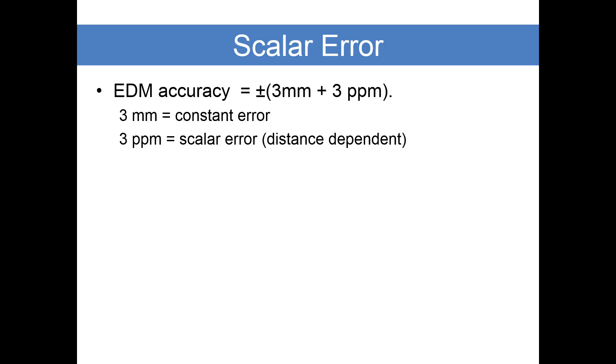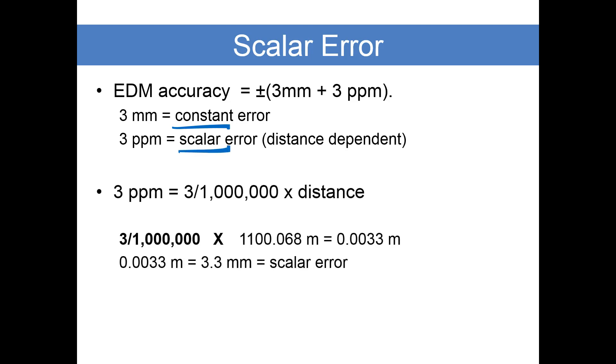Remember, 3 millimeters is our constant error and 3 parts per million is the scalar error. We take 3 parts per million, that is 3 divided by 1 million, and multiply that times our distance of 1100.068 meters. The numbers come out to be 0.0033 meters or 3.3 millimeters. That is our scalar error.